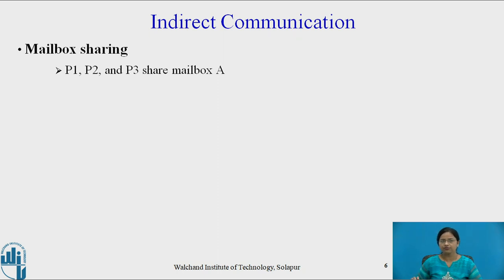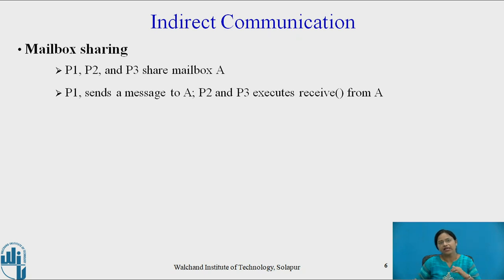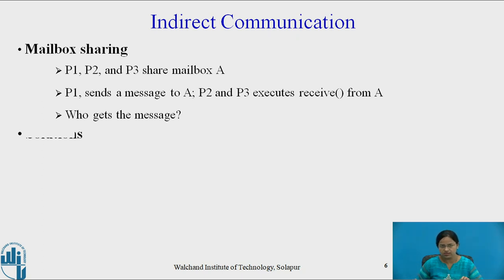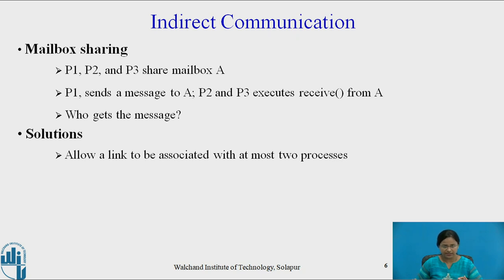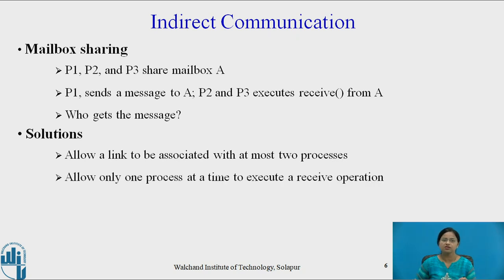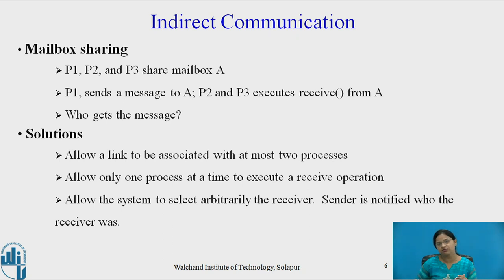Suppose we have three processes P1, P2, and P3 which share a common mailbox A. P1 sends a message to mailbox A, and P2 and P3 both execute receive from A. Then who will get the message? The operating system may allow a link to be associated with at most two processes, or allow only one process at a time to execute a receive operation, or select the receiver arbitrarily and notify the sender who the receiver was.